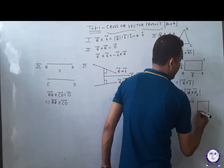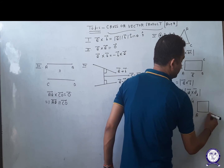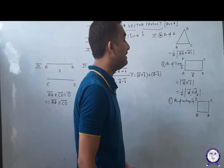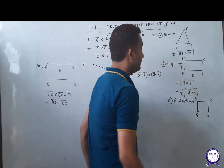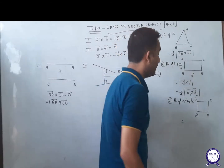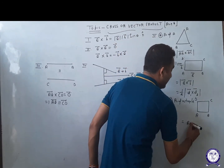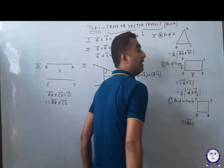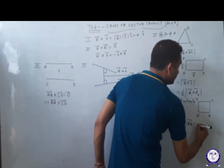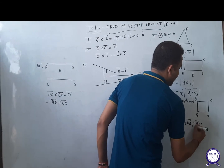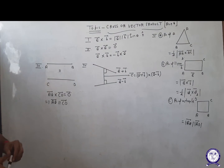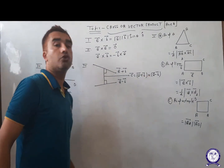Area of rectangle is length into breadth. Here you can see length is AB — that means the magnitude of AB vector represents the length of the rectangle. Get the AB vector, then get its magnitude for length. Breadth is AD vector and its magnitude gives the breadth. Length into breadth gives the area of rectangle. These are the formulas for CROSS or vector product.